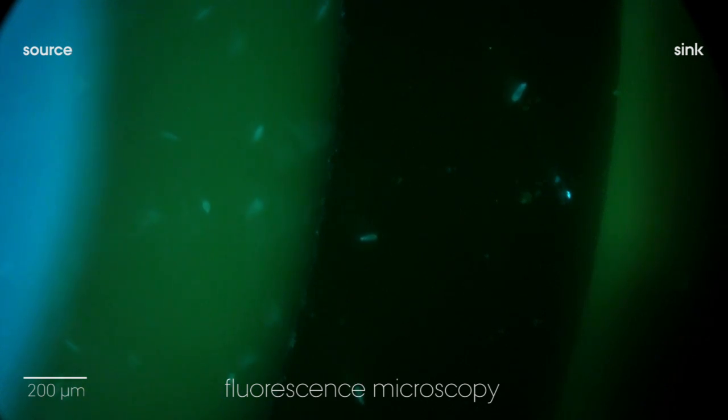They appear blue because they have taken up the chemical perylene, which emits blue light when exposed to UV light, as we see here under the fluorescence microscope. With the organisms as carriers, perylene can be transported across the diffusion barrier in the chamber.